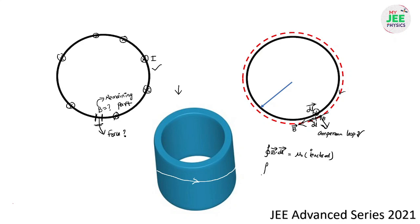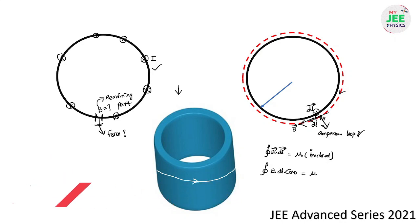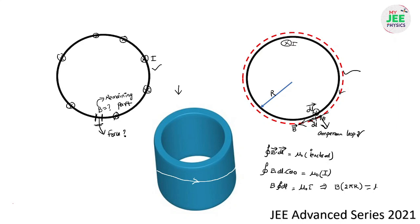So integral B · dL, since dL and B are in the same direction, cos 0° = 1. The total current enclosed is I. By symmetry, B is the same everywhere, so B × ∮dL = μ₀I. Integrating dL around the loop gives 2πR, so B × 2πR = μ₀I, and therefore B = μ₀I / 2πR. This is the magnetic field due to the entire cylinder, just outside of it. But what we require is the magnetic field due to the remaining cylinder, not including the small part we are taking.